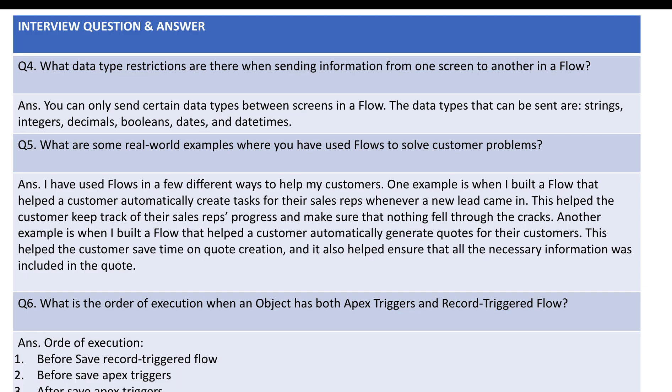Question four: what data type restrictions are there when sending information from one screen to another in a flow? You can only send certain data types between screens: string, integer, decimal, boolean, date, and datetime. We cannot pass lists, sets, and maps — only those types I have mentioned. I will show these demos as well in the series.